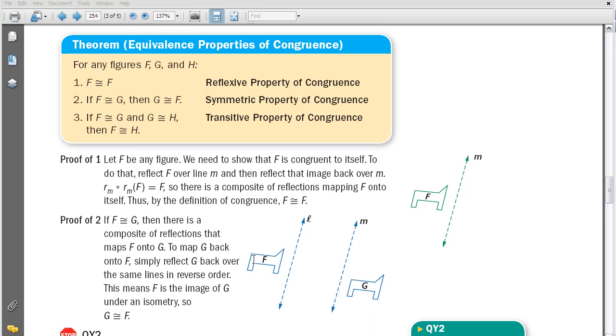Let's next look at the symmetric property of congruence. If I reflect F over multiple lines, over L and over M here, then F would be congruent to G. And then if I take G and I reflect it back over line M and then over line L, G would have to be congruent to F. So that's where the symmetric property comes from.